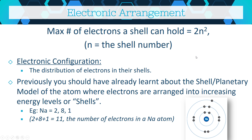The term 'electronic configuration' just means the distribution of electrons in their shells. You can show this by drawing a ball diagram or by writing it out — for example, sodium has 11 electrons placed as 2, 8, 1. Depending on what a test question asks, it will tell you whether to draw a shell diagram or just write it out in this format.